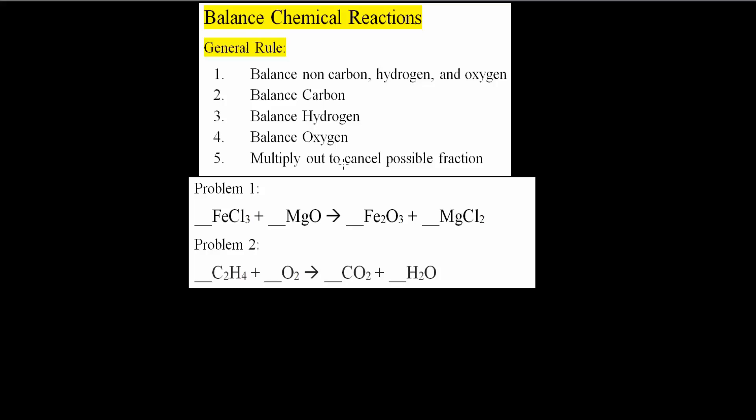So let's do our first problem. So here I see 1 Fe, I see 2 Fe. So what I would want to do first is simply put a 2 here. So this way, now our irons are balanced.